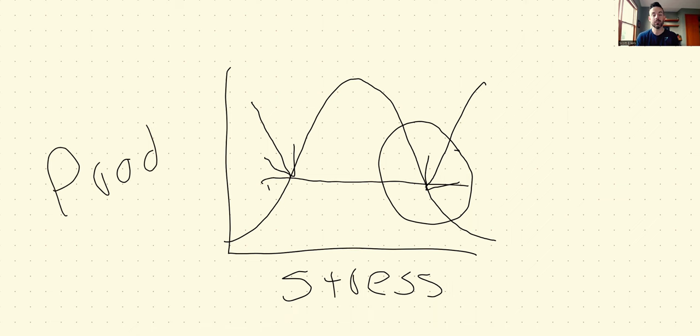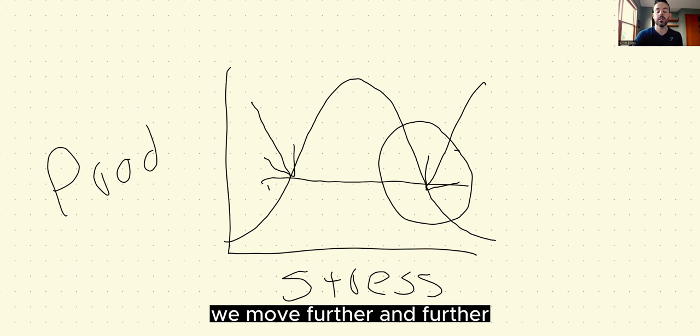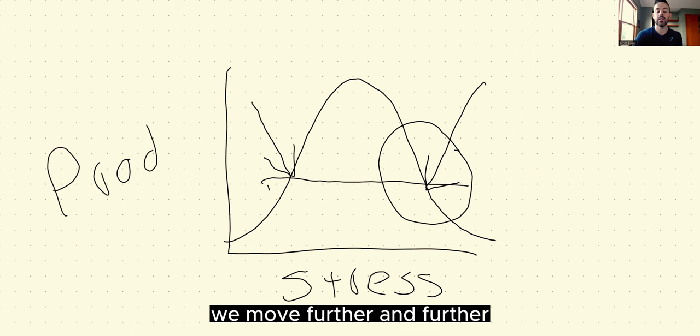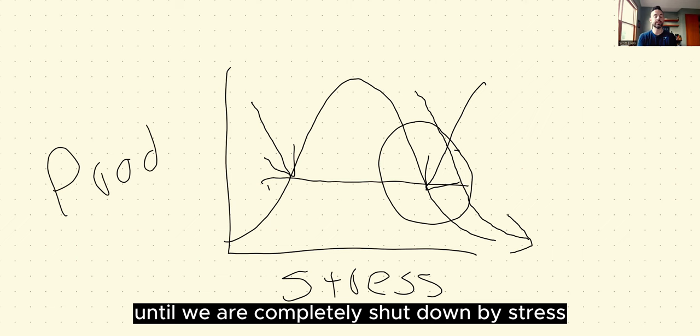We motivate ourselves. Other people motivate us. They try to increase the pressure because they think we don't care. And when that pressure increases, we move further and further down this side of the slope until we are completely shut down by stress.